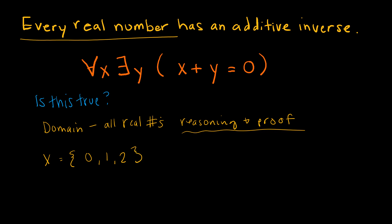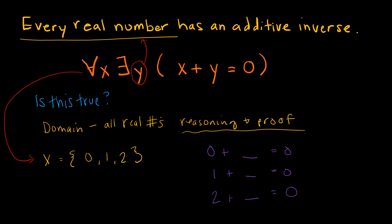This is a completely different scenario because we have a list of values. We're still going to assume y is just any real number. So now I'm saying: for all x in my set {0, 1, 2}, there exists some real number y such that x plus y equals 0. So: 0 plus blank equals 0, 1 plus blank equals 0, and 2 plus blank equals 0. If I can find values to make each statement true, and those values belong to the real numbers — which they do — then I've proven it's true.